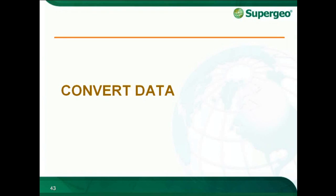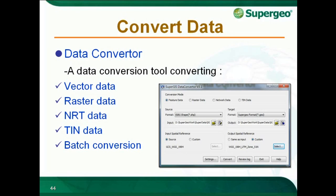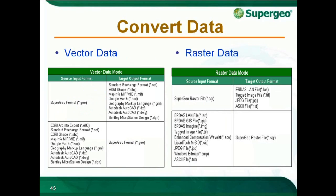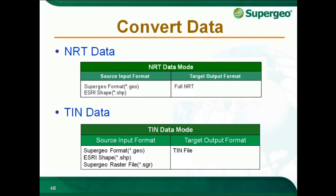Convert Data: SuperGIS Data Converter enables users to convert GIS data to meet different platform requirements — you don't need to worry about GIS file compatibility. Vector data, raster data, network data, and tin data can be converted. If you need to convert many files at a time, the batch process can fit your needs. SuperGIS Data Converter allows many kinds of GIS data formats to be converted into the format defined by SuperGIS Technologies, and it also supports converting into various common GIS data formats. It can also convert vector data to network data and tin data.